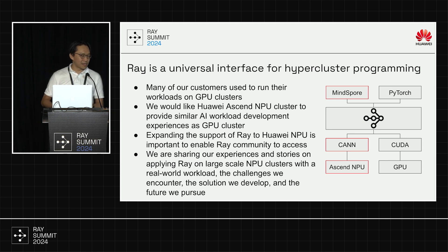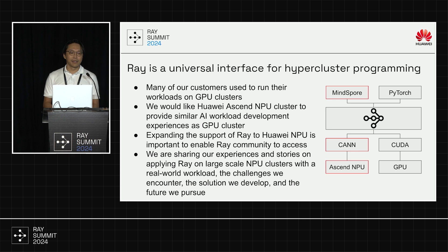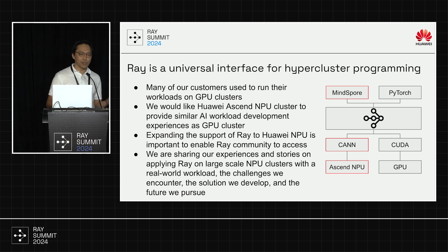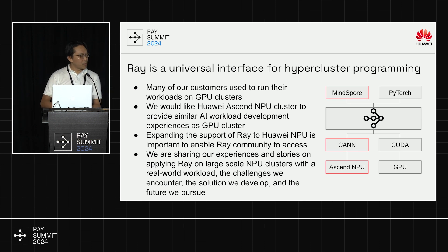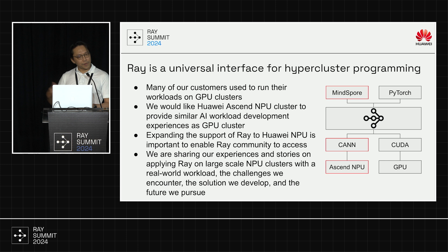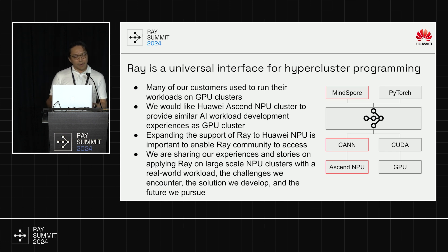About two years ago, we started thinking about how to build a hyperscale cluster. The first question was: what programming model fits such a cluster? We wanted the cluster to handle conventional workloads, AI workloads, and what we call converged workloads — AI plus X. We came across Ray and thought it was a perfect solution because of its flexible and agile execution model.